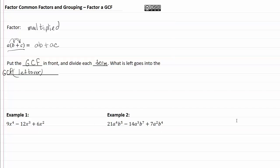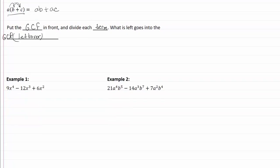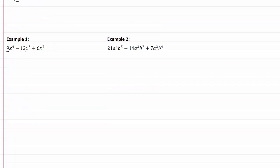So let's take a look at how that works in our first example. First thing I'm going to look at is my numbers. I have nine, twelve, and six, so it looks like my common factor there is going to be a three.